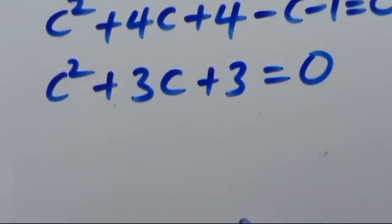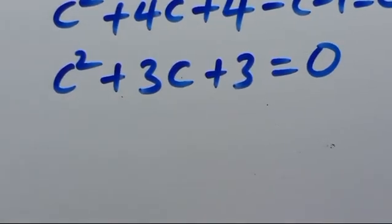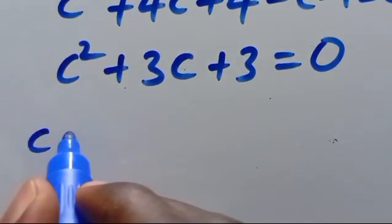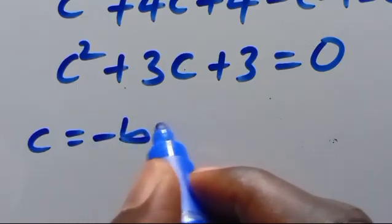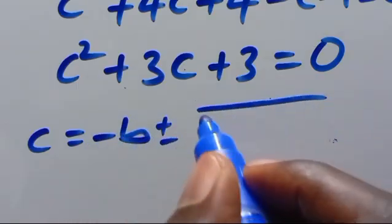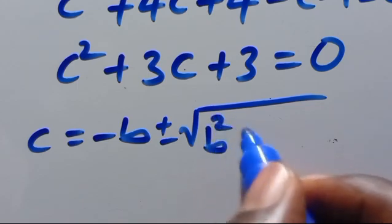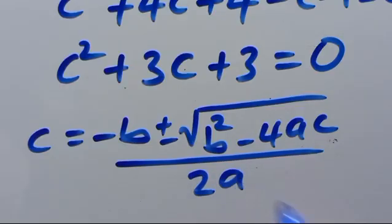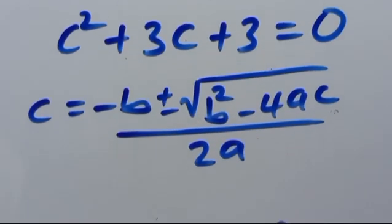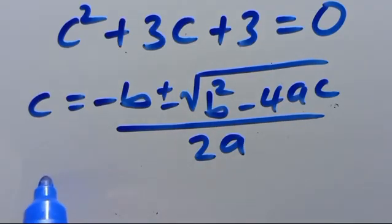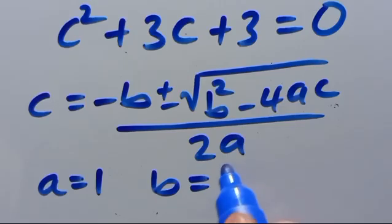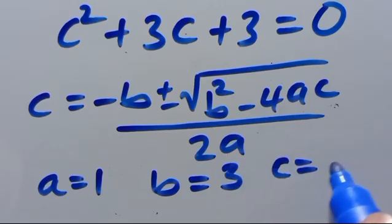We can solve this using the quadratic formula: c equals (−b ± √(b²−4ac)) / 2a. Here, a equals 1, b equals 3, and c equals 3.